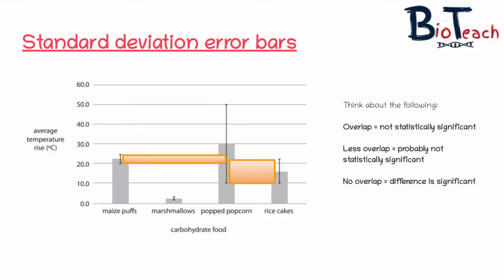When the standard deviation error bars overlap even less — like between the popcorn and the maize puffs — it's a clue that the difference is probably not statistically significant. Again, in order to confirm that, you would need to perform a statistical test.